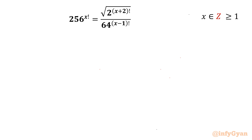Welcome back to InfiGyan friends. Today in this video we are going to take up another challenging question from exponential equations with factorials. The given equation is 256 raised to the power x factorial equal to square root of 2 raised to the power (x+2) factorial, divided by 64 raised to the power (x-1) factorial, where x belongs to integers and is greater than or equal to 1.